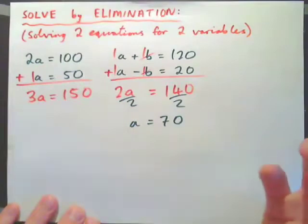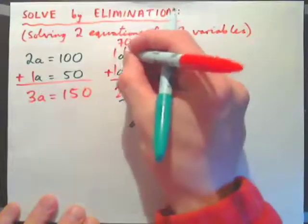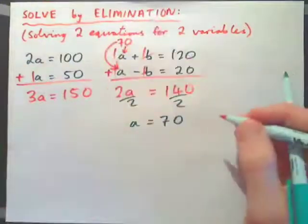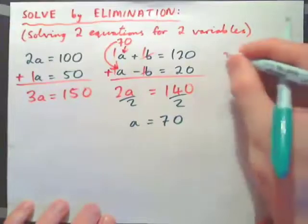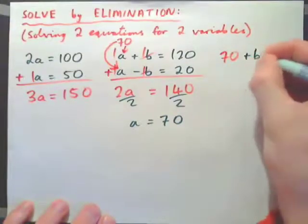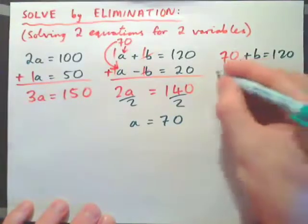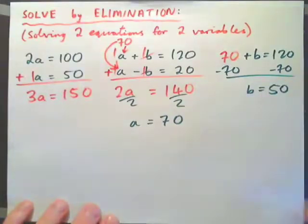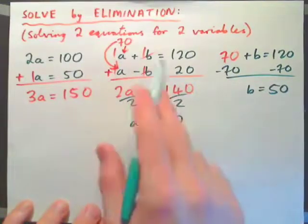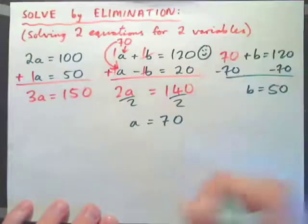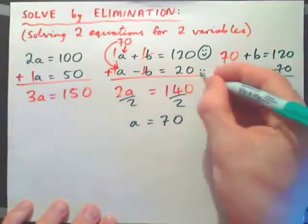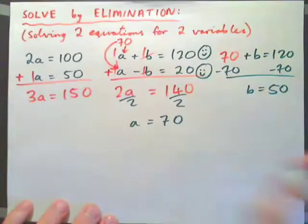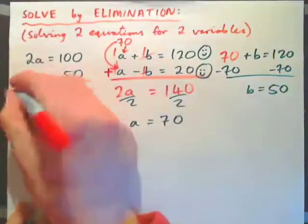Now how would we find the cost of a banana? Plug 70 in for apple into the top equation: 70 plus b equals 120. Subtract 70 from both sides, and banana equals 50 cents. Now check your equations: 70 plus 50 is 120 — that works. And a minus b equals 20: 70 minus 50 equals 20 — so this one also works out.